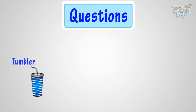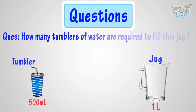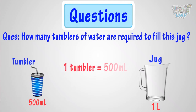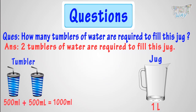Capacity of one tumbler is 500 milliliters, and capacity of this jug is 1 liter. Then, how many tumblers of water are required to fill this jug? One tumbler contains 500 milliliters. Two tumblers will contain 500 milliliters plus 500 milliliters equals 1,000 milliliters or 1 liter. So, two tumblers of water are required to fill the jug.